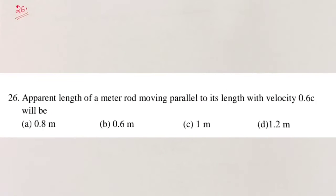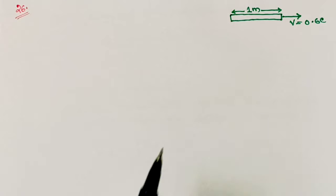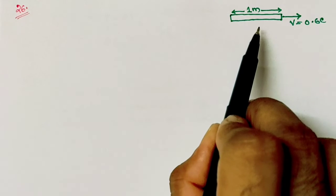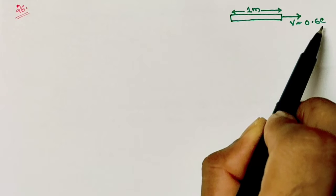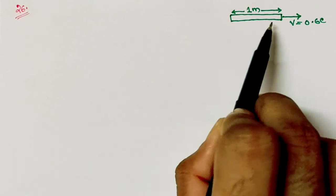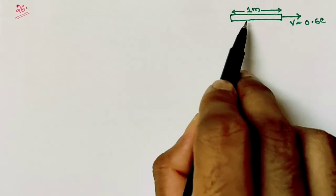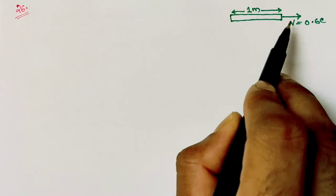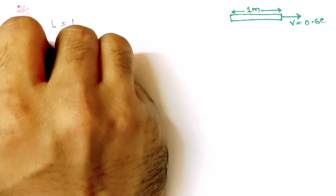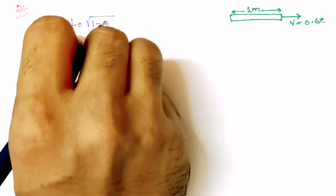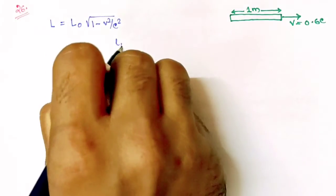Question number 26: The apparent length of a meter rod moving parallel to its length with velocity 0.6c will be. A meter rod is moving parallel to its length with speed 0.6c. We have to find the contracted length. When an object moves parallel to its length, its length contracts or decreases, and the length is given by L equals L0 times the square root of 1 minus v² by c².